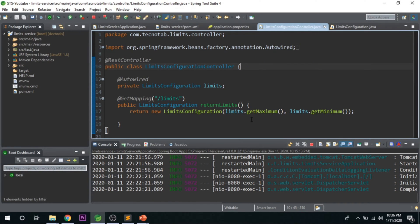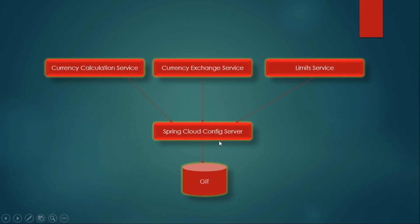Till now we are getting the values from application.properties. As we discussed earlier, the limit service is connected with the Spring Cloud Config Server. This is where all our common configurations will be placed, and it will be talking to Git. Basically, we will be keeping everything in Git, and the Spring Cloud Config Server will pick the values from Git on demand from the microservices.